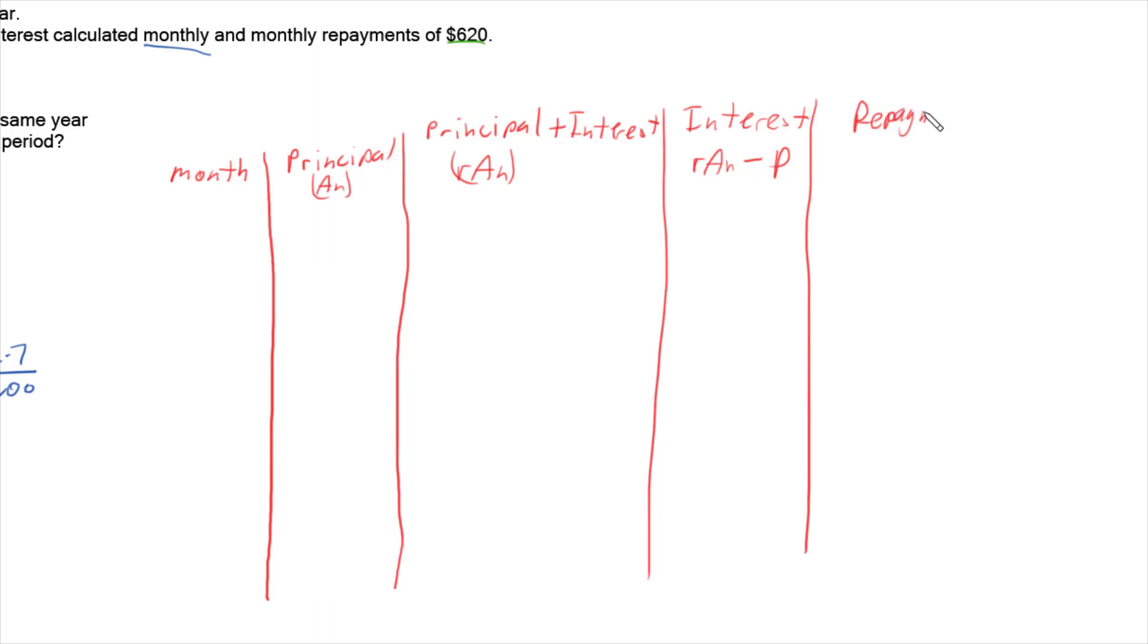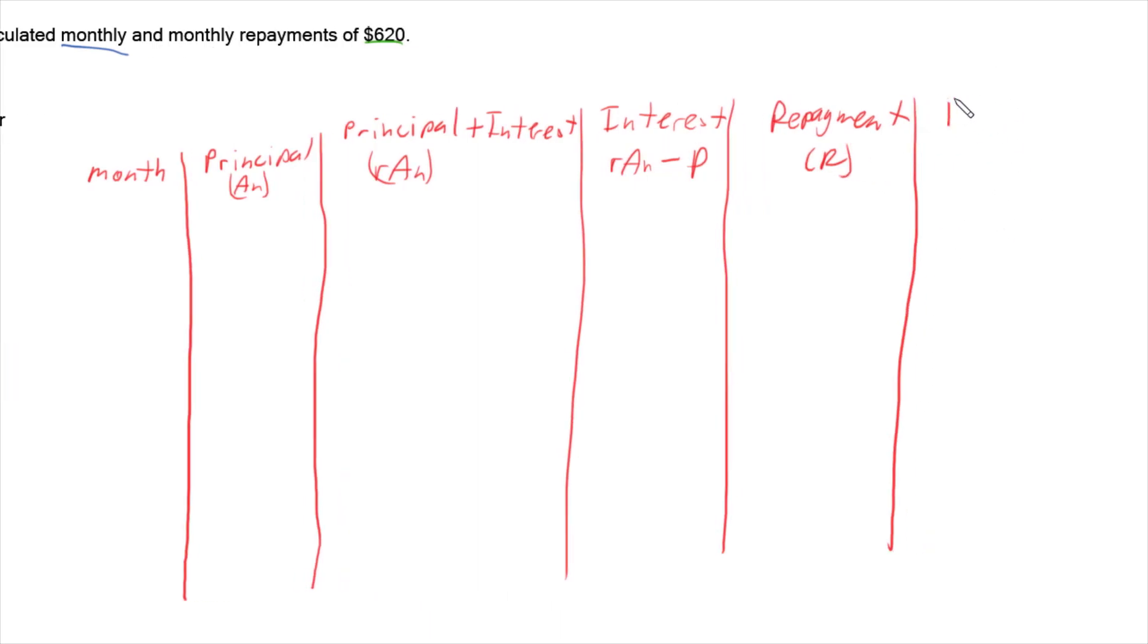And then we put into this table also the repayment, which is R, and we put in the balance at the end of that period, which is the entire part of the rule, r*A(n) minus our repayment.